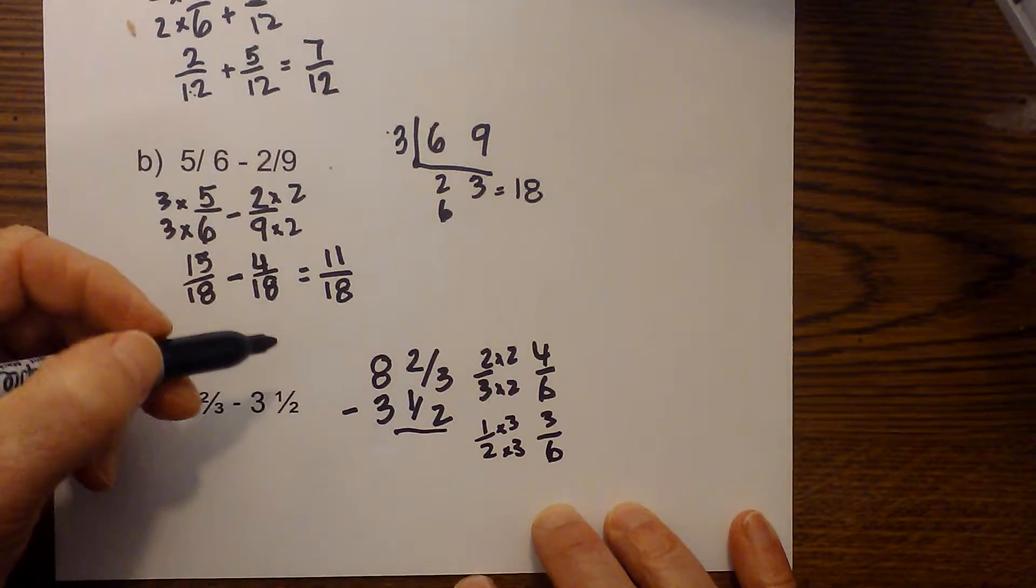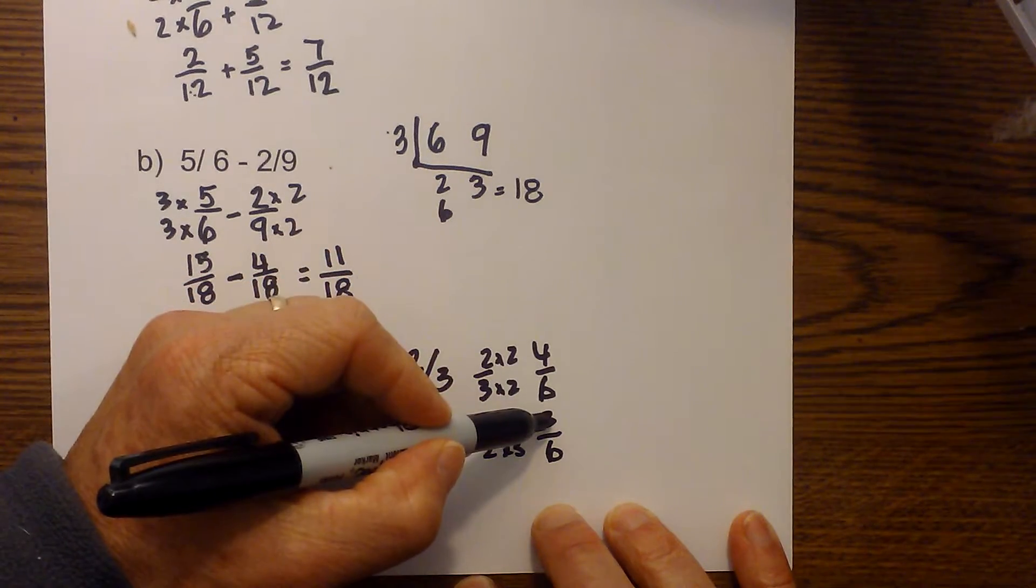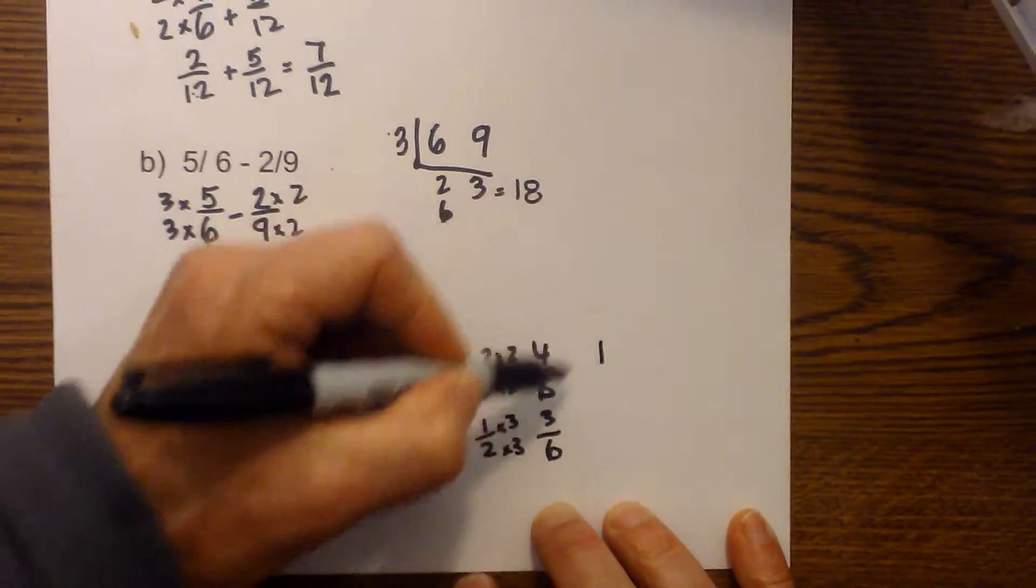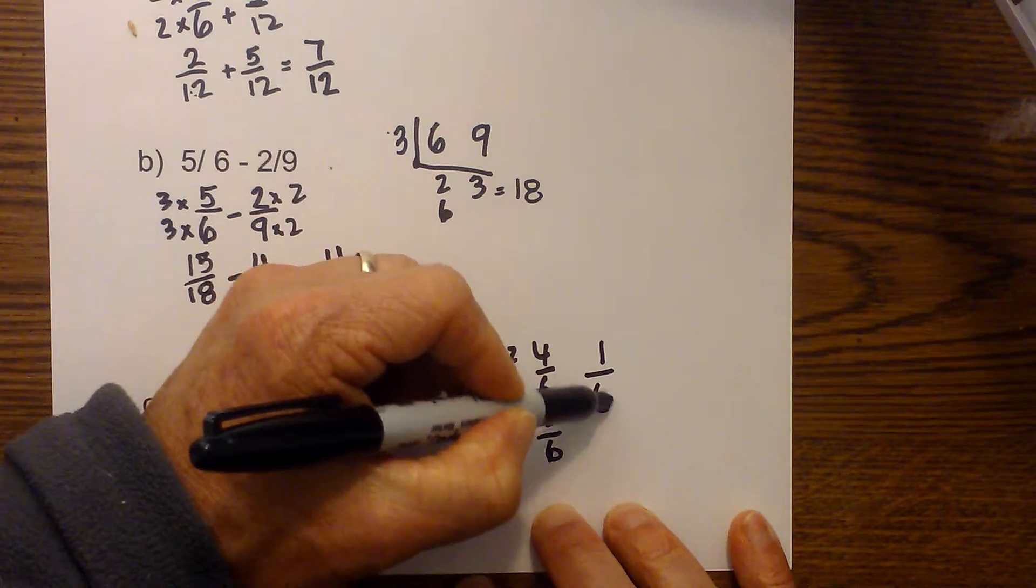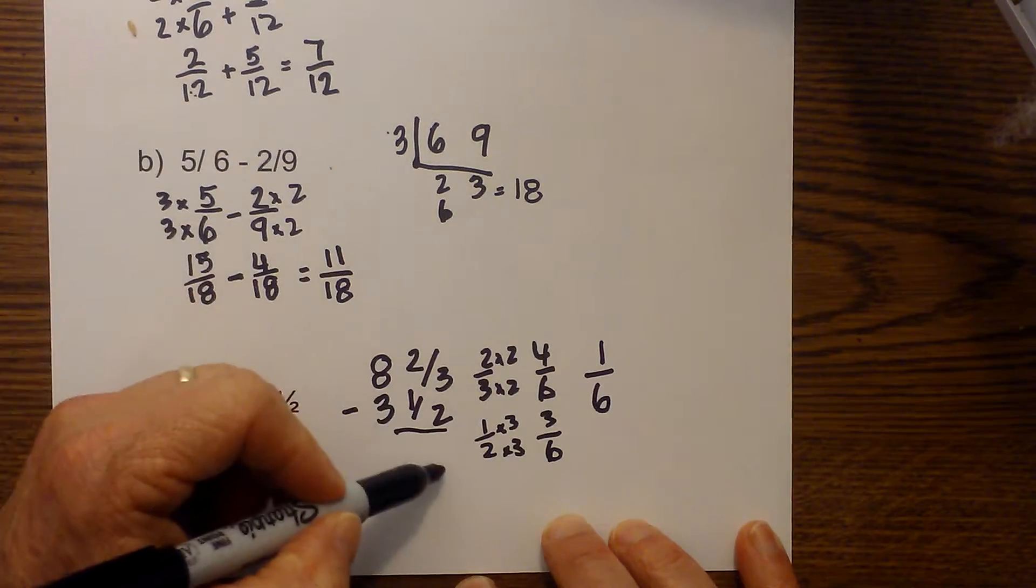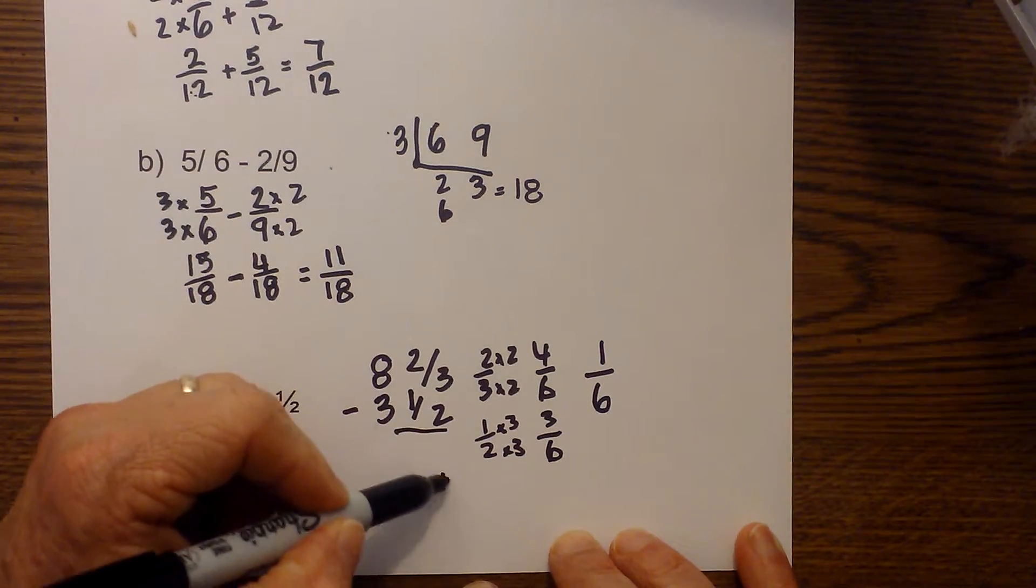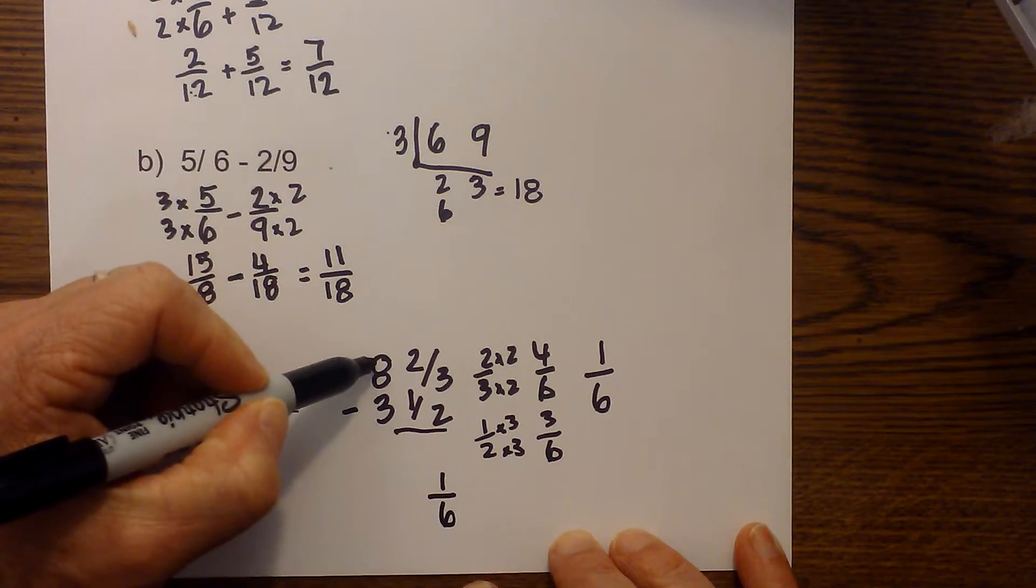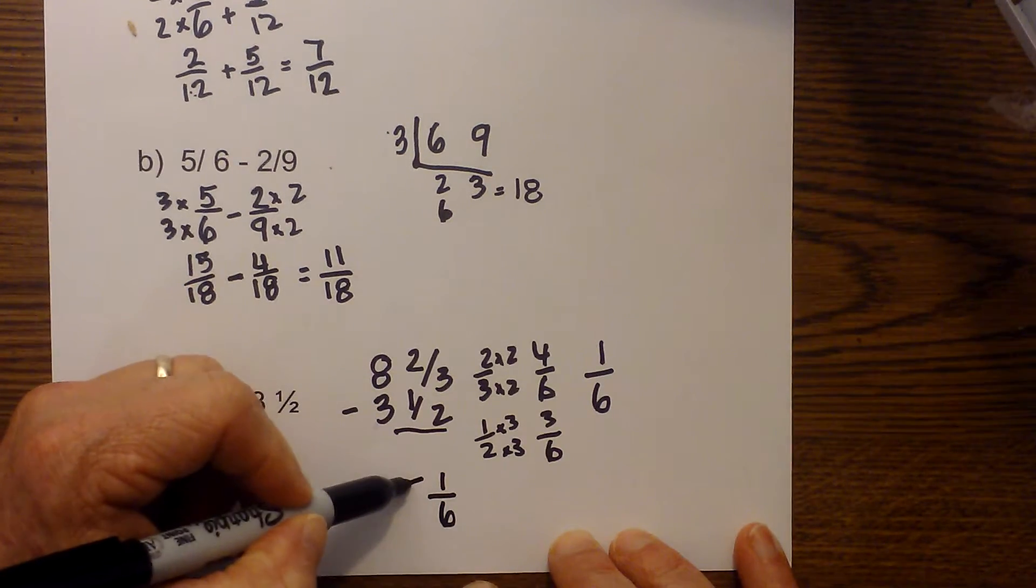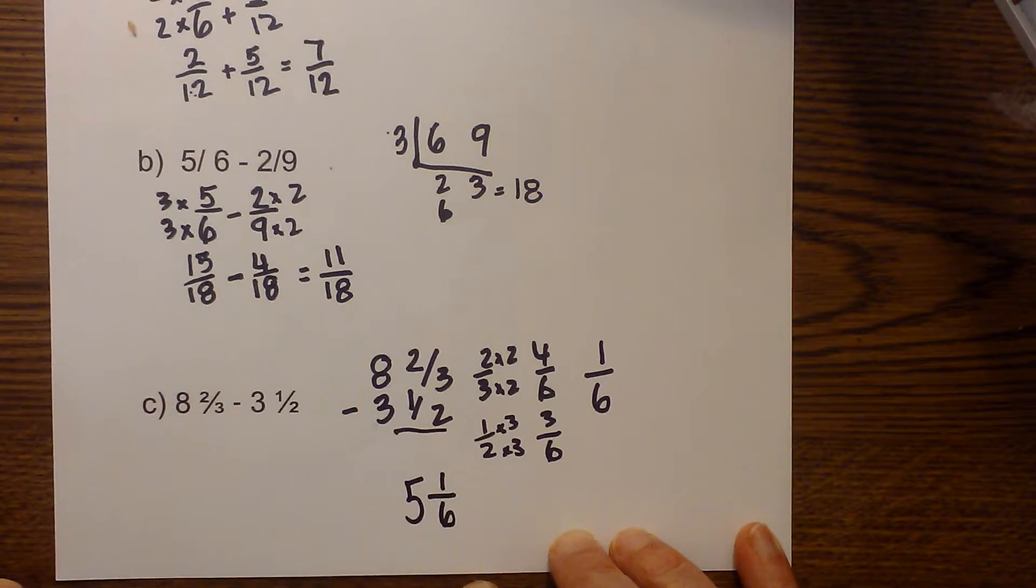So now all we do is subtract four minus three is one. Keep these numbers the same. So we have one sixth. And then we have eight minus three is five. So the answer there is five and one sixth.